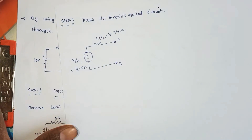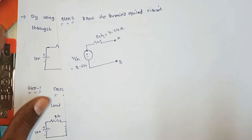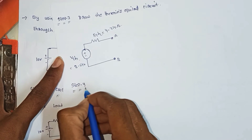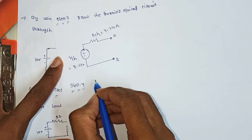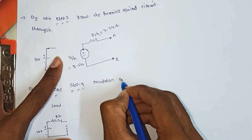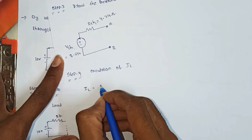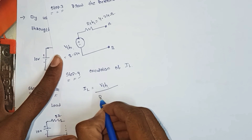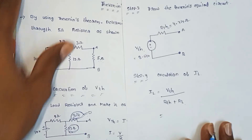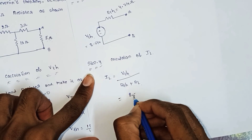This is the Thevenin equivalent circuit — this is important. Step 4: calculation of the current in load resistance. Formula: IL equals VTH divided by (RTH plus RL). VTH is 8.57 volts.